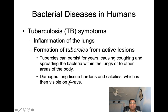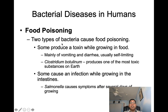There are two types of bacteria that cause food poisoning. Some produce a toxin while growing in food — these usually cause vomiting and diarrhea and are sometimes self-limiting. However, Clostridium botulinum produces one of the most toxic substances on earth. Others cause an infection while growing in the intestines — for example, Salmonella, which causes symptoms after several days of growing.